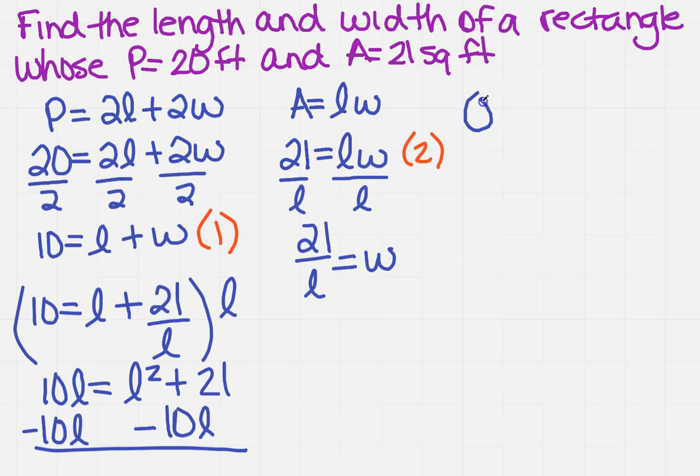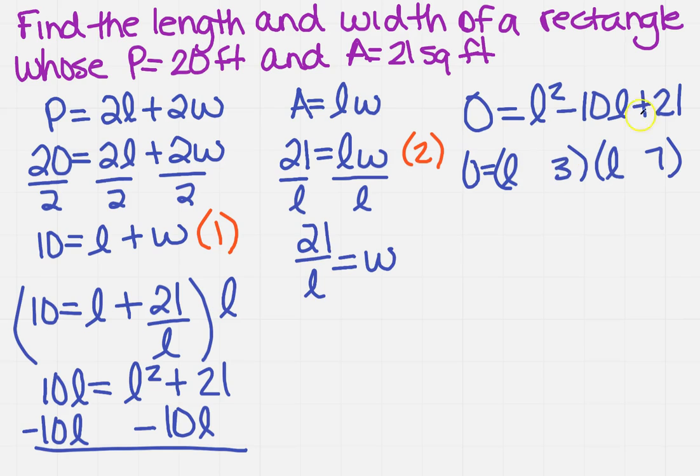Now I need the factors of 21 that add up to 10. I know right off the bat that's seven and three. So I'm going to have zero equals L and L, and I had seven and three. The signs are the same, they're both minus, so I get L minus three and L minus seven.